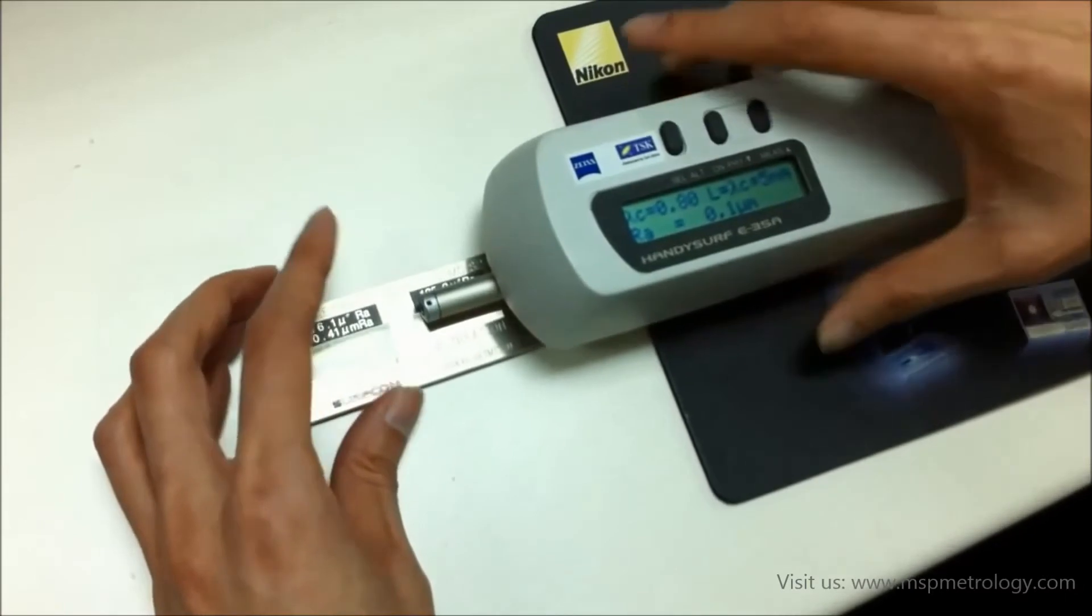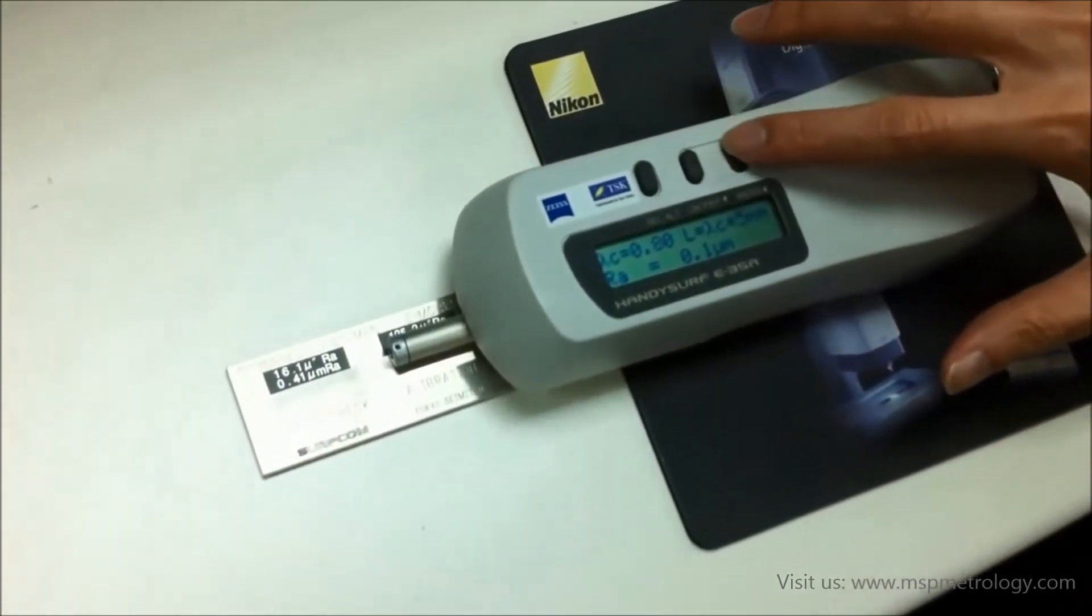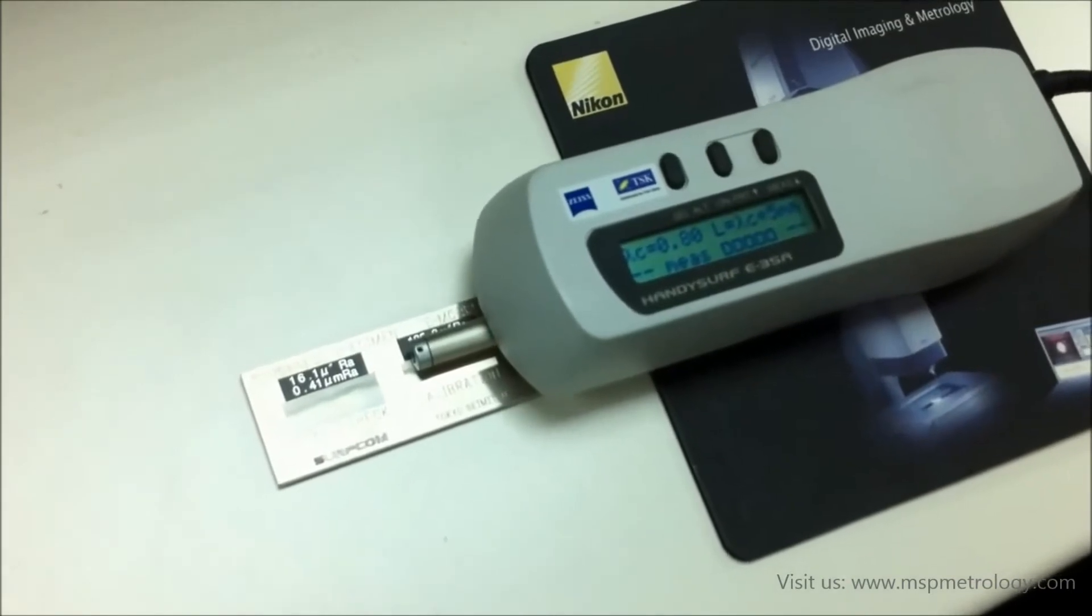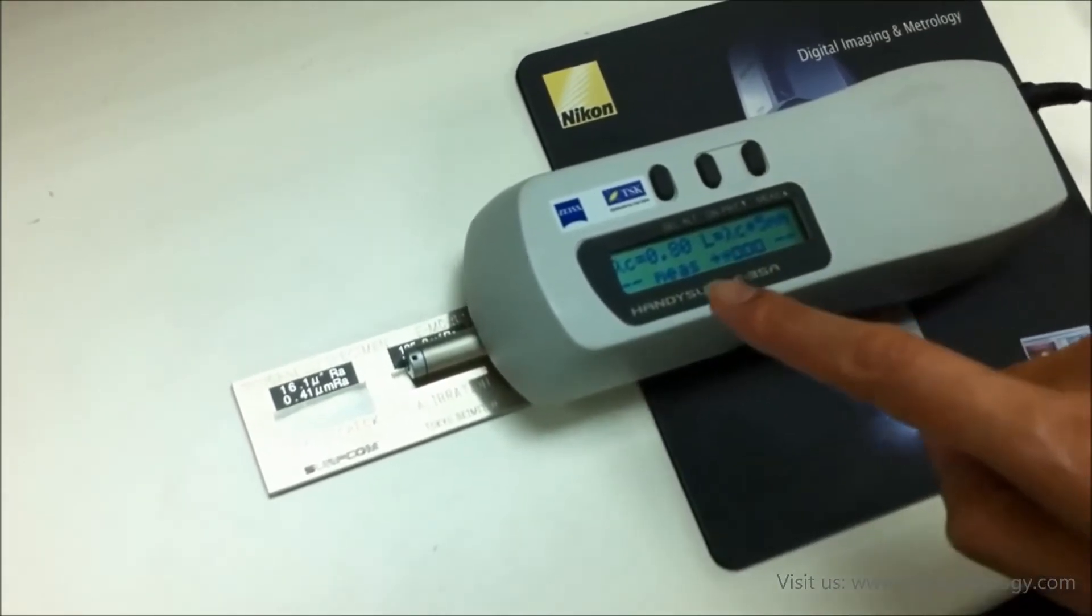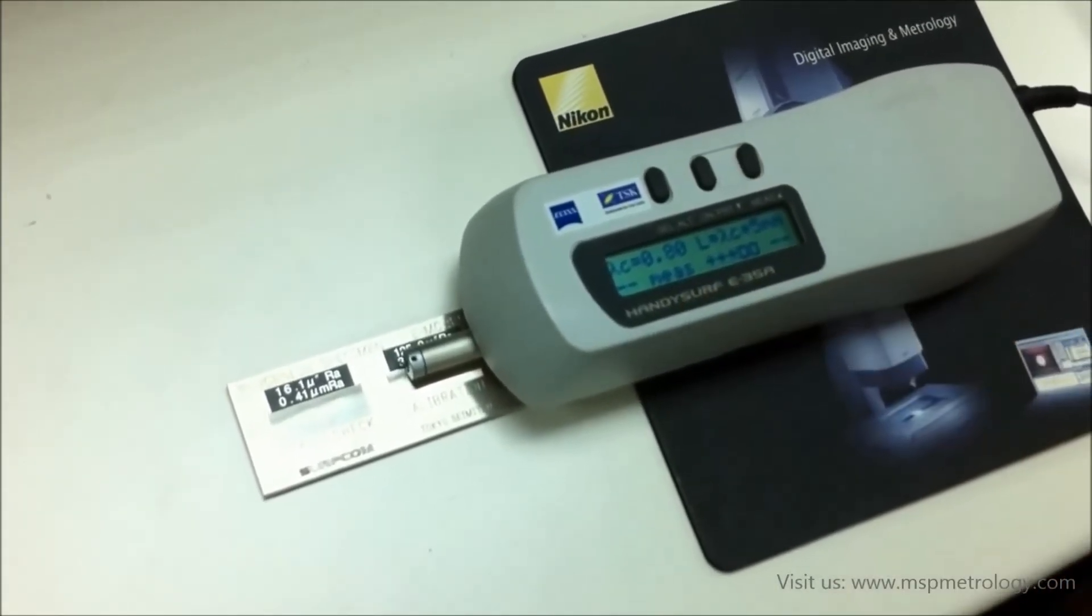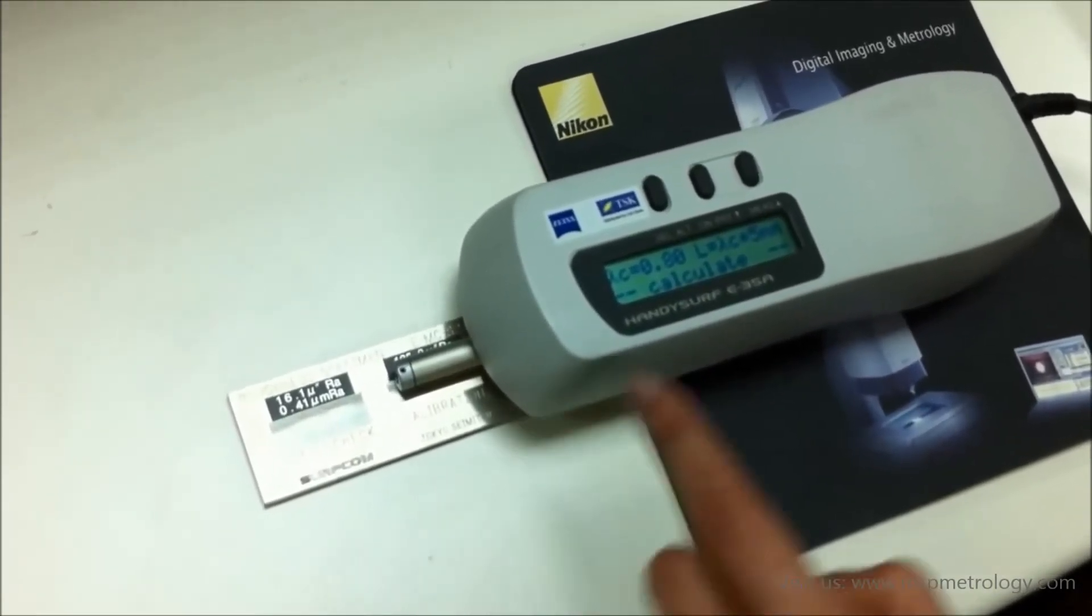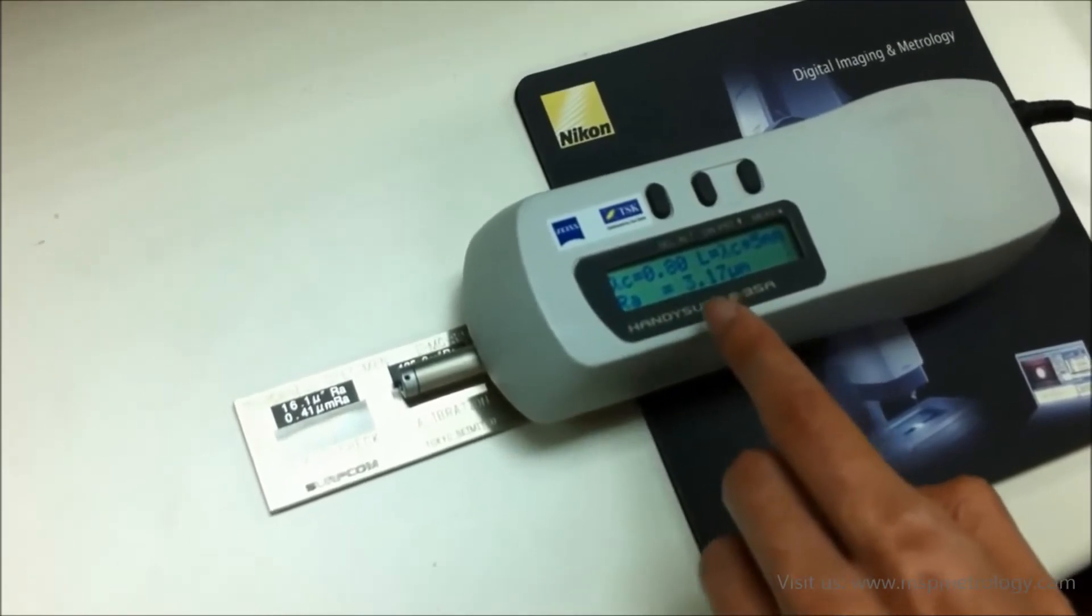Then you press the measure button. You'll see the indicator here showing 'measure' and the status is 'retracting'. After measurement, it does a calculation and shows you the RA value.